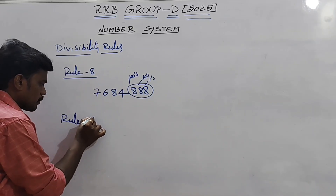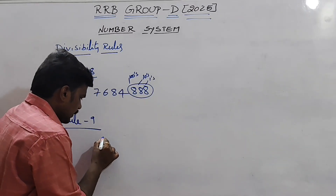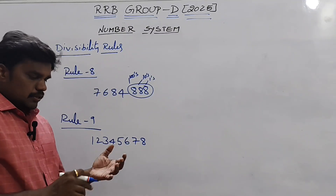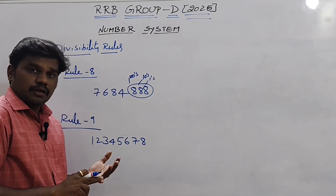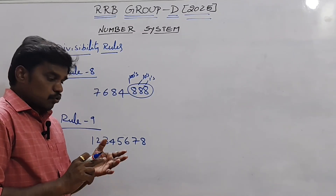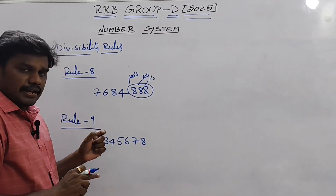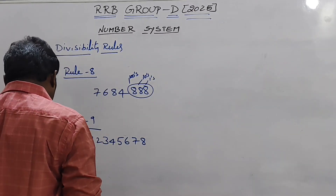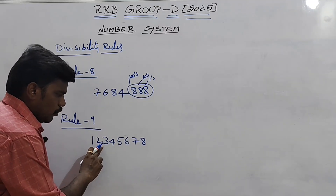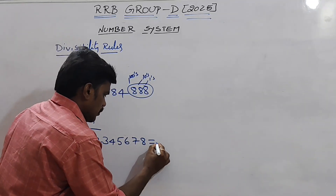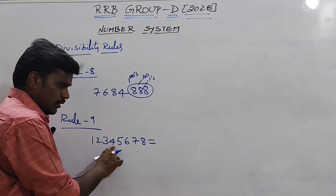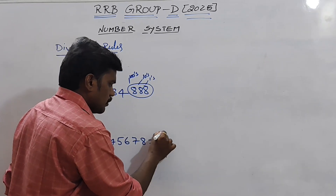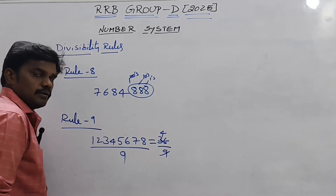Rule number 9: Take the number 345,678,123. The method is the same as rule 3 — add all digits. 1+2+3+4+5+6+7+8+3 equals 36. Since 36 divided by 9 is 4, the entire number is divisible by 9. Rule 9 and rule 3 work the same way — add all digits and check divisibility.